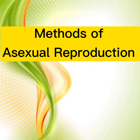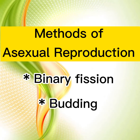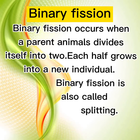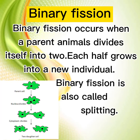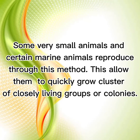Methods of asexual reproduction include binary fission and budding. Binary fission occurs when a parent animal divides itself into two, and each half grows into a new individual. Binary fission is also called splitting. Some very small animals and certain marine animals reproduce through this method, allowing them to quickly grow a cluster of closely living groups or colonies.